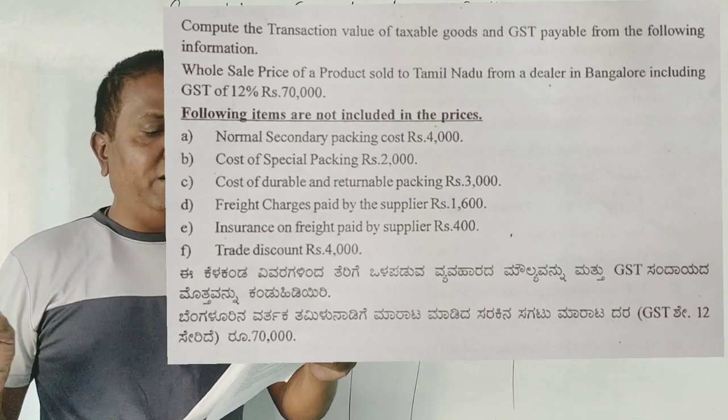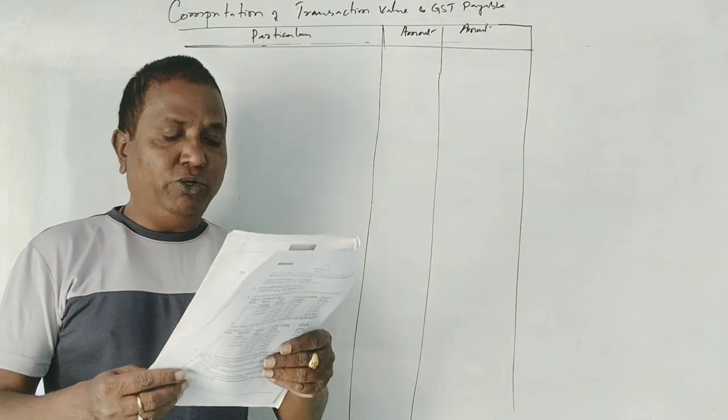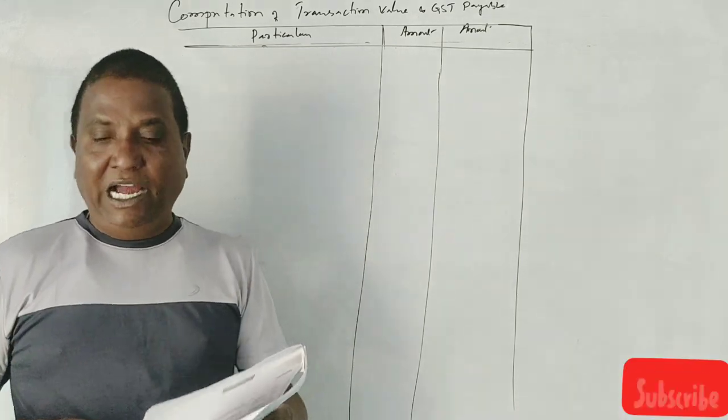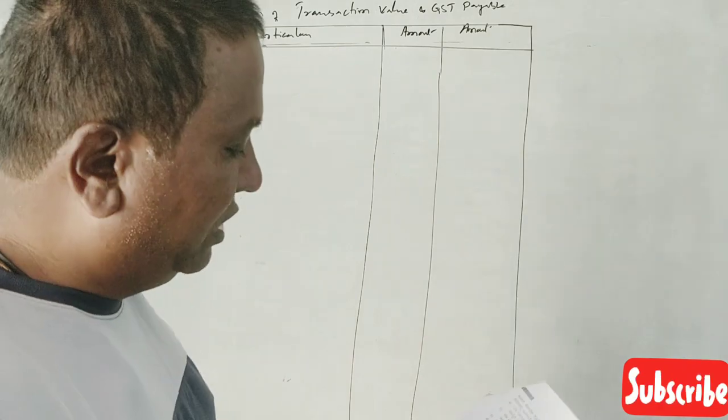Freight charges paid by the supplier, insurance on freight paid by the supplier, and trade discount is Rs.4,000.